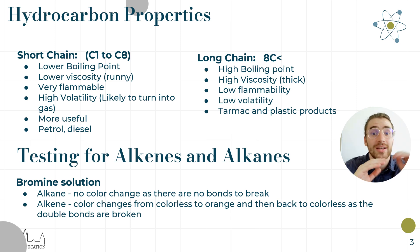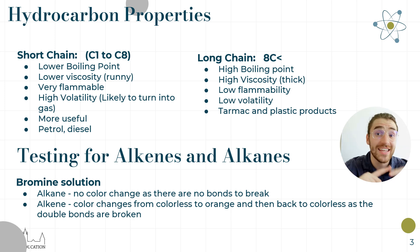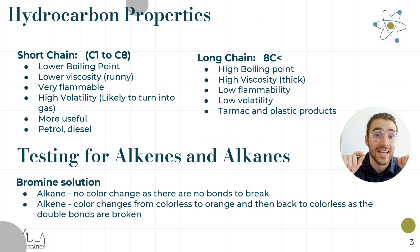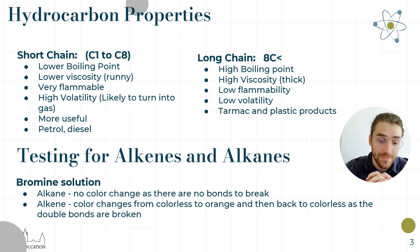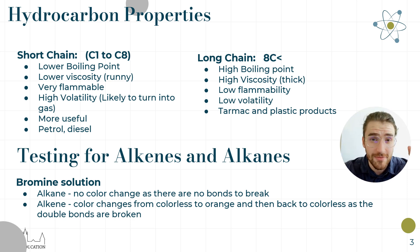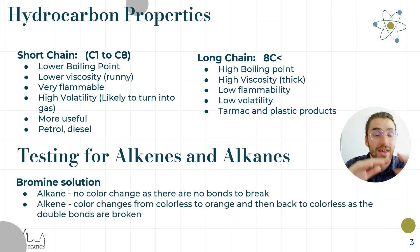To test for alkenes and alkanes: an alkane has a single bond between the carbons, while an alkene has one or more double bonds between carbons — normally just a single double bond. To test this we use the bromine solution. Bromine is usually an orange color.